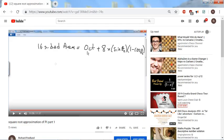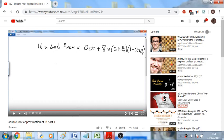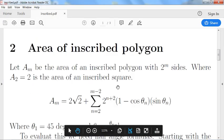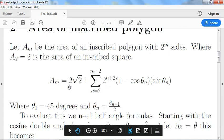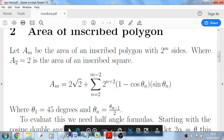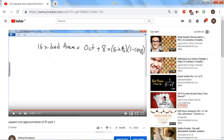So at the end of part one we got as far as this formula: 16 sided area is equal to the octagon plus eight times whatever. And what we can see is that actually in general we can write it like this. So this is basically the same formula as here but this is just for 16 sides.